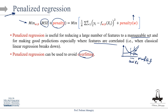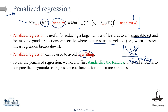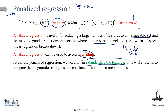However, to use penalized regression we need to first standardize the features. This allows us to compare the magnitude of regression coefficients. For example, imagine wage is a function of education (in years) and working hours (in minutes). The weight for education might be in the scale of ten thousands of dollars per year, while the weight for working hours in minutes would be tiny — on the scale of cents. So the scales are vastly different.